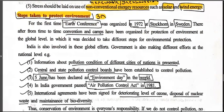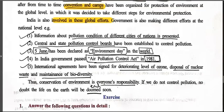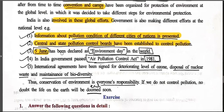Steps taken to protect the environment — three mark question, very important. For the first time, the Earth Conference was organized in 1972 in Stockholm, Sweden. Thereafter, from time to time, conventions and meetings have been organized for protection of the environment at the global level, deciding different steps for environmental protection. India is also involved in global efforts, and the government makes different efforts at the national level. Pollution condition information of different cities is presented periodically. Central and State Pollution Control Boards have been established. 5th June has been declared as World Environment Day. In India, the government passed the Air Pollution Control Act in 1981.